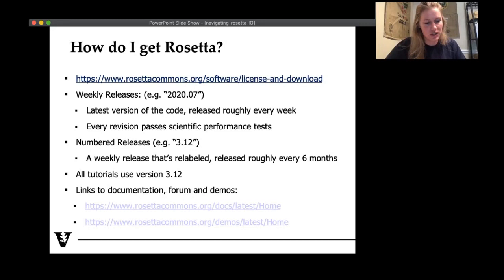I wanted to briefly touch on the release types that we have. Weekly releases, for example, this 2020.07, this is the latest version of the code. These get released roughly every week. And importantly, these have to pass different types of tests before they get released to the general public. And then we have these less frequent releases. We're going to be using Rosetta version 3.12 throughout this workshop. Again, these have passed all scientific tests and also usability tests as well. Links to documentation, forum, and demos. These are incredibly helpful when you're just getting started. There's a lot of great information on rosettacommons.org for this.